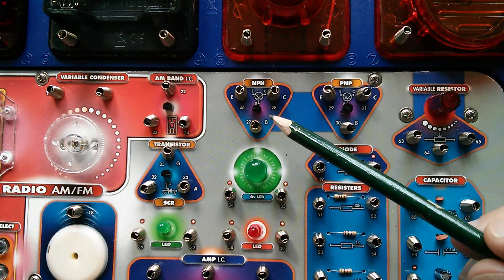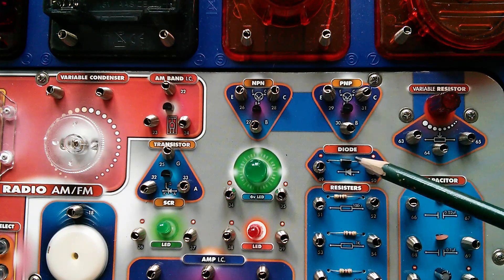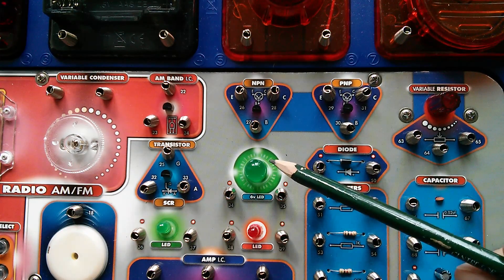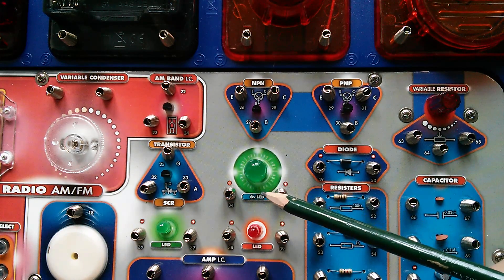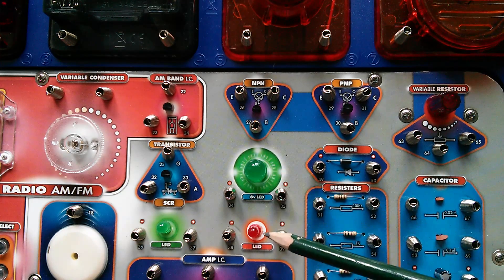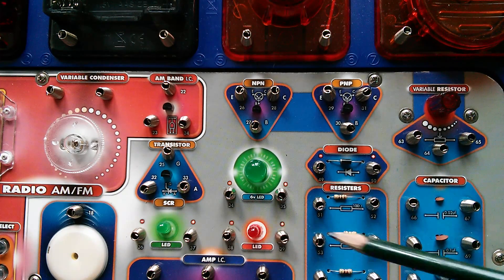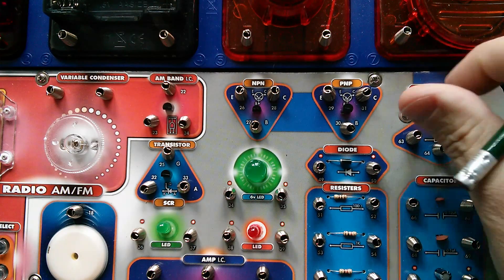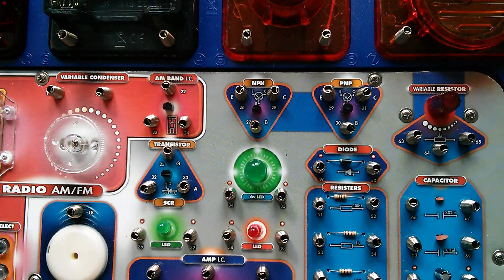We've got transistors here, NPN, PNP. We've got a diode here. We've got some light emitting diodes. This one's a 6 volt LED. So I'm presuming that has a built-in resistor. These ones are just standard LEDs. And we have a variable resistor here, a potentiometer.